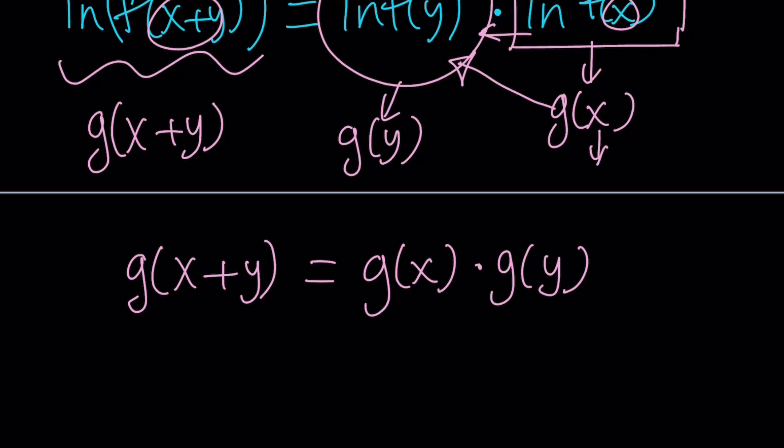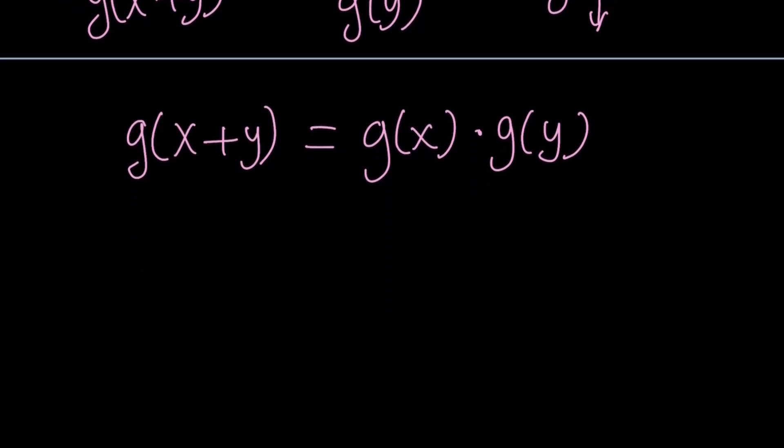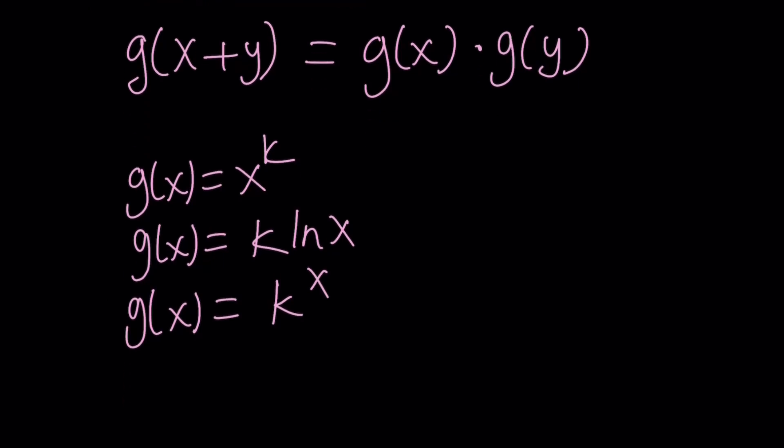So, now, we get ourselves a nice Cauchy functional equation. Okay. Hopefully, you memorized. But if you didn't, that's perfectly fine. There are four cases for these kinds of functions. One of them is the power function, like x to the power k. Another one would be k times the log function, like lnx. Another one would be k to the power x, where it's exponential. And there is a fourth one, which is the linear one. I guess you can write it as kx. There are four cases.